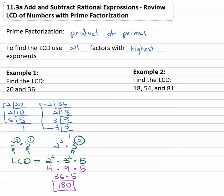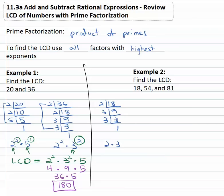Now let's try 18, 54, and 81 using the same process. Finding the prime factorization of 18: dividing by 2 nine times, then by 3 three times, then by 3 once — so 18 equals 2 times 3 squared. For 54: dividing by 2 twenty-seven times, then by 3 nine times, then by 3 three times, then by 3 once — that's 2 times 3 cubed.